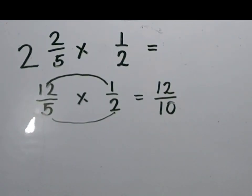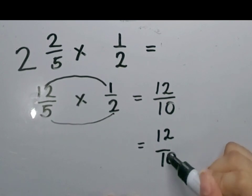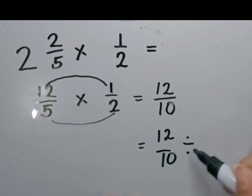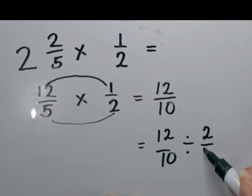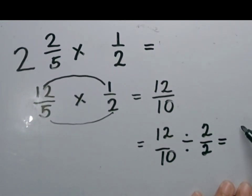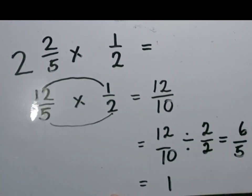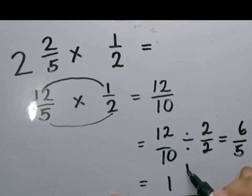Next, let's express the product in simplest form. The GCF of 12 and 10 is 2. So let's divide 12 over 10 by 2 over 2. Our final answer will be 6 over 5, or 1 and 1 fifth.